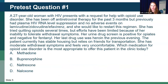We're going to start with a patient case because that's what we're here for. This is the pre-test question: a 27-year-old woman with HIV presents with a request for help with opioid use disorder. She has been off antiretroviral therapy for the past three months, but previously had plasma HIV RNA level suppression and no adverse events on lamivudine, zidovudine, and efavirenz, and she would like to restart this regimen. Her urine drug screen is positive for opiates and negative for fentanyl. Her last drug use was heroin the previous evening. She has moderate withdrawal symptoms. Which medication for opioid use disorder is most appropriate to offer this patient in the clinic today?